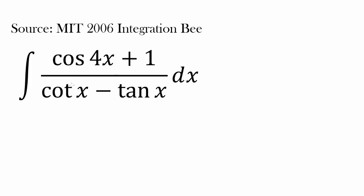We are integrating cosine of 4x plus 1, divided by cotangent of x minus tangent of x. I picked this question because I loved it — you need to know a variety of trigonometric identities and how they work together. This fraction is going to simplify in a really intriguing way, and we are going to find the solution quite easily once we have the first few steps spot on.